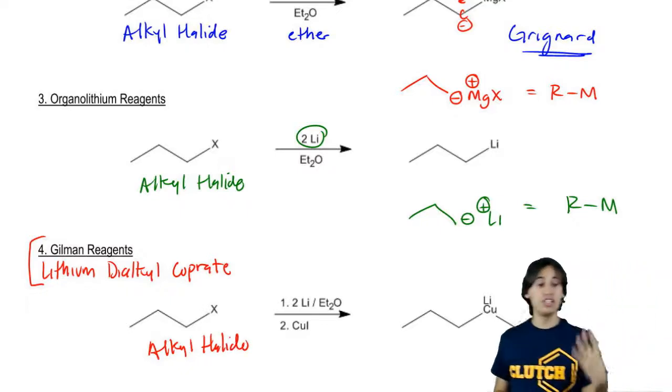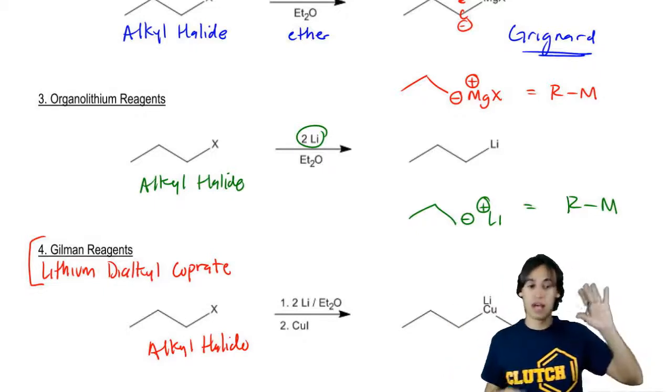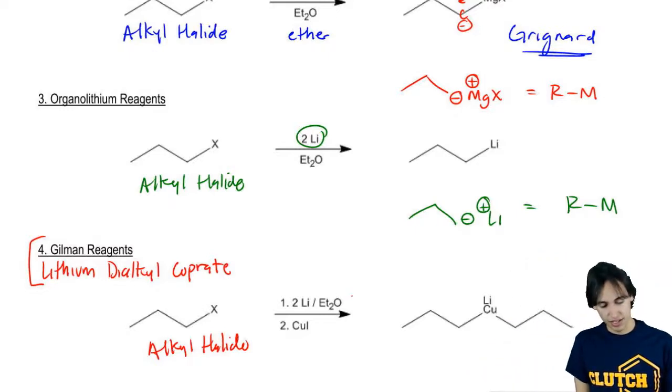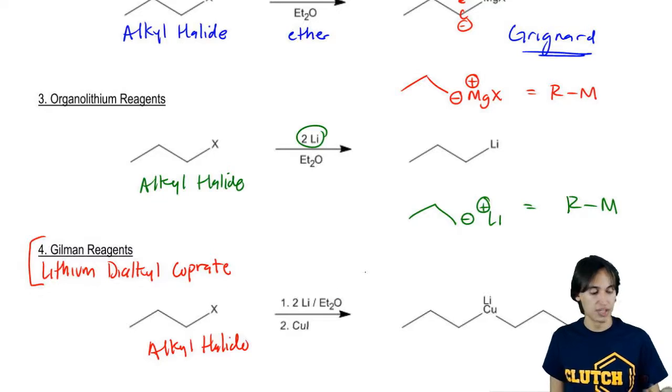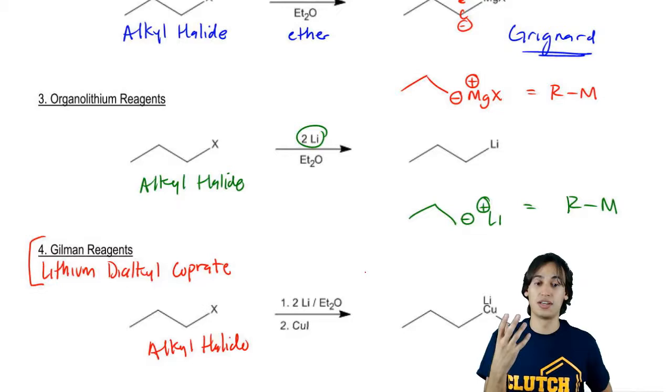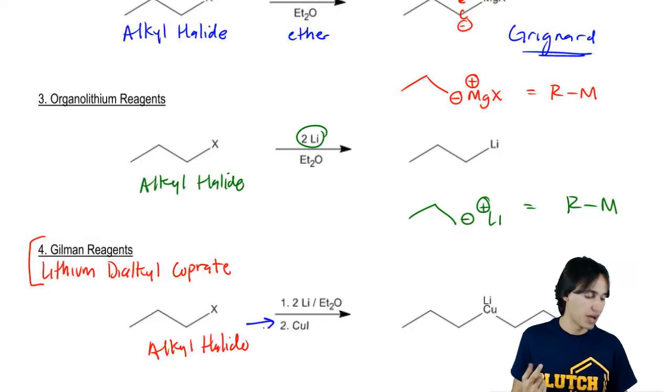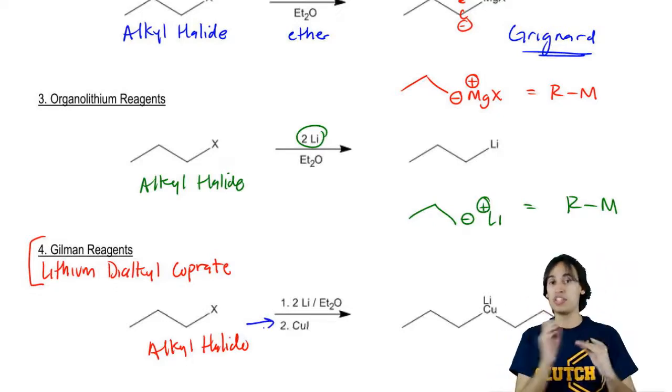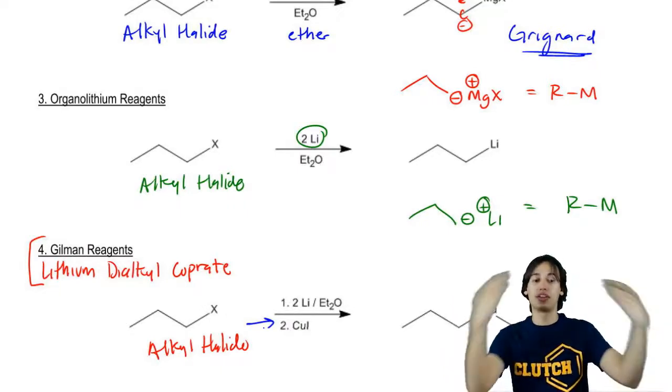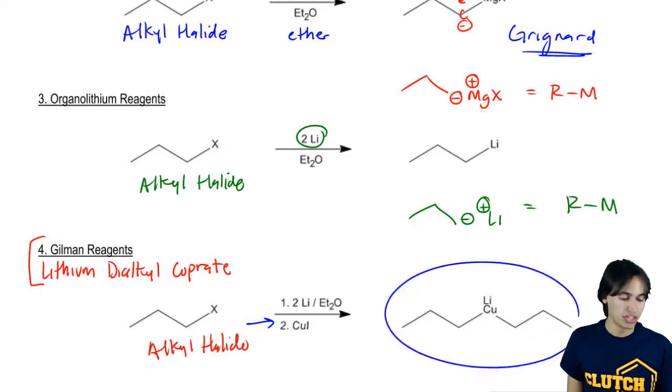So you start off once again with an alkyl halide. And by a mechanism that you don't need to know – please don't learn this right now. This is not what the point of this topic is. We're just trying to figure out how to make them and what they look like. What we're going to wind up getting is you combine two lithiums in ether. So that's really the same exact step as the organolithium. But then you have a second step and the second step is the giveaway that it's Gilman. You have copper iodide. So you have CuI, copper iodide, and what that's going to do is it's going to take two of those organolithiums together and complex them to one copper.